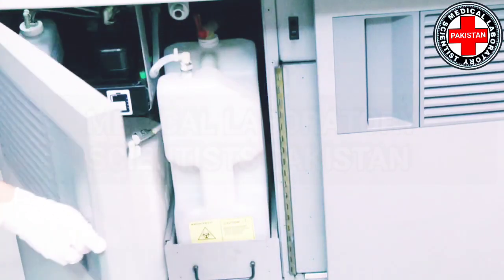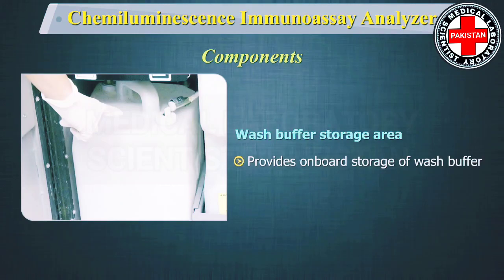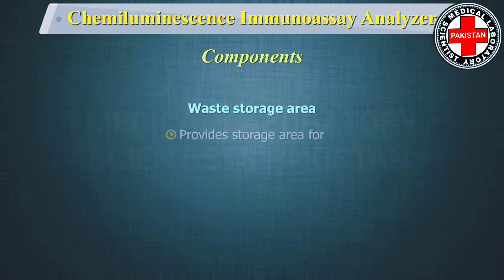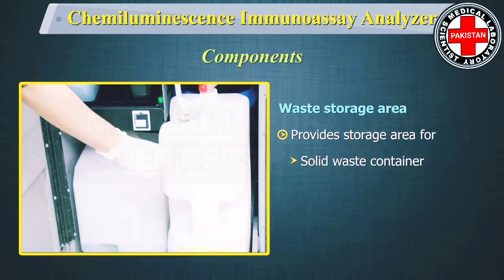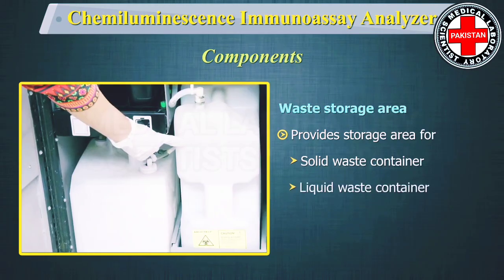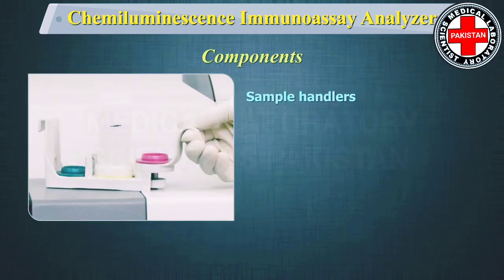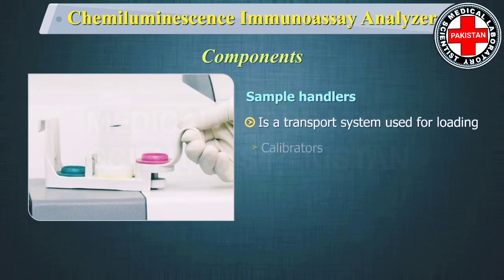The supply and waste center is the on-board storage area for bulk solutions and waste. The wash buffer storage area provides on-board storage of wash buffer. The waste storage area holds the solid waste container for used reaction vessels and the liquid waste container, accessed by sliding out the waste drawer. The sample handler is a transport system used for loading calibrators, controls, and patient samples and presenting them to the processing module.